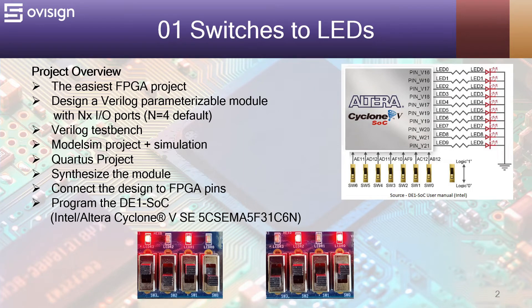Project 1: Switches to LEDs. Let's have a quick project overview. This is by far the easiest FPGA project that you can do on a development board. In this project we are going to design a Verilog parameterizable module with N IO ports.